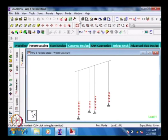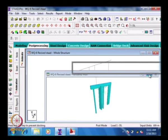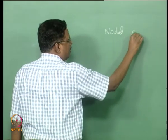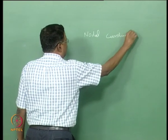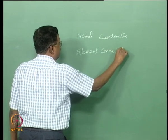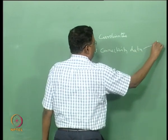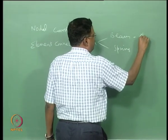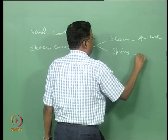Now we will see the 3D rendering. We will be generating this by giving input data: one is the nodal coordinates, next is element connectivity data. Here we will be giving two types of elements — one is the beam element and another is the spring element. The beam element is to idealize the structure and the spring element is to idealize the soil.